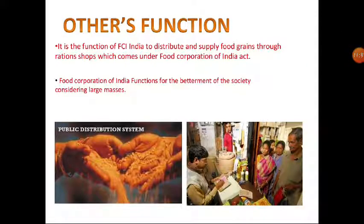The FCI distributes and supplies food grains through ration shops under the Food Corporation of India Act. A biometric thumbprint system has been introduced so that each family receives a justifiable ration kit from the government, bringing transparency to the distribution process.